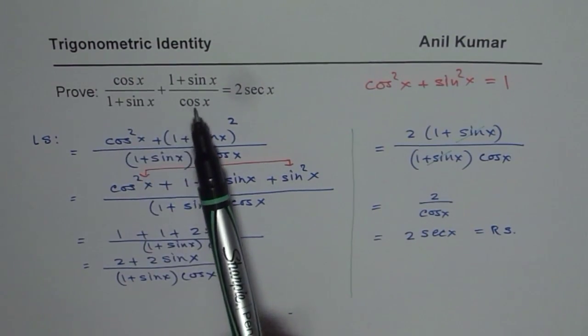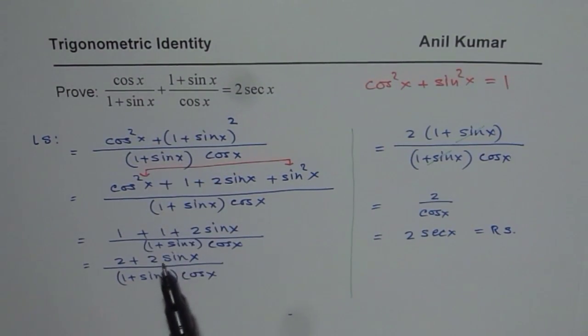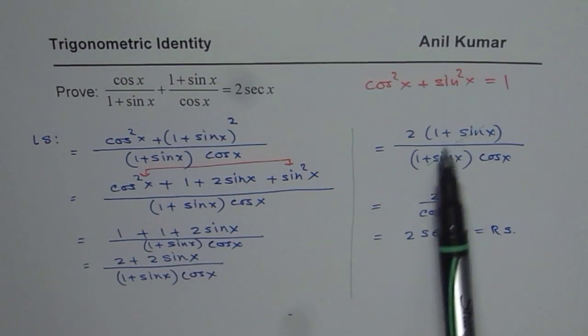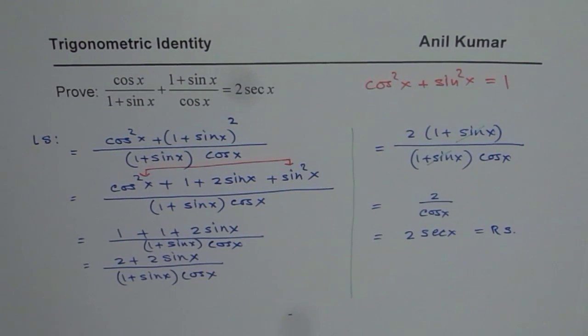So the idea is take the common denominator, cross multiply, simplify the numerator, factor it out, and then you get the right side. That is how we can prove that left side equals right side. Thank you.